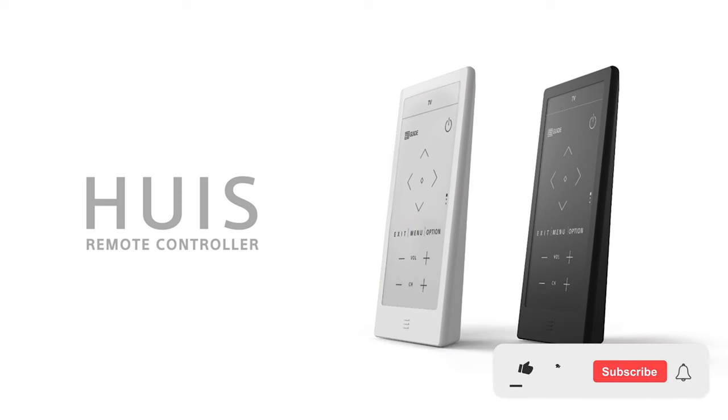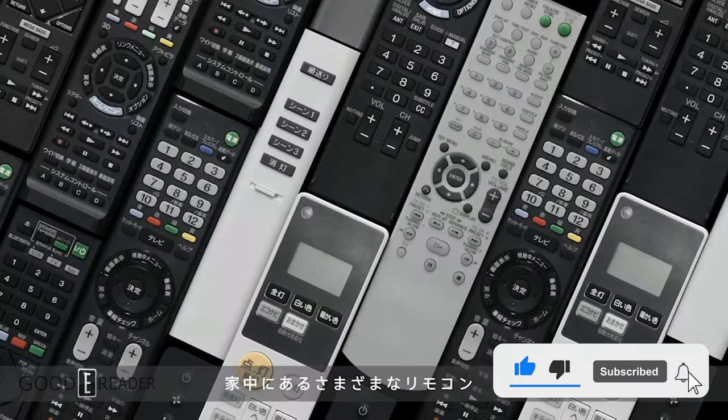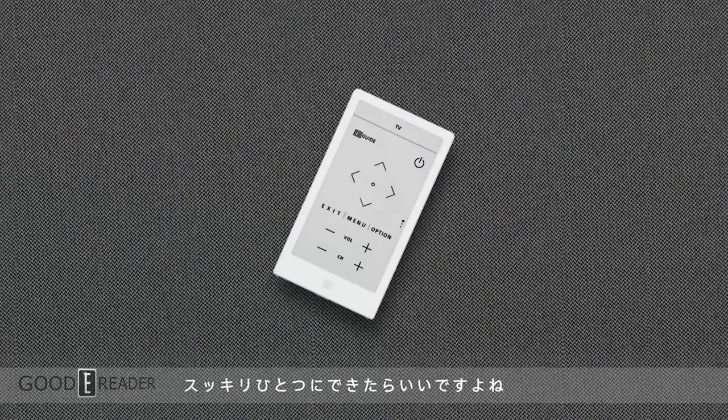You may or may not be aware of this. This is the Sony HUIS Home Smart Remote. It features an e-ink screen, made by Sony, and completely made in Japan.